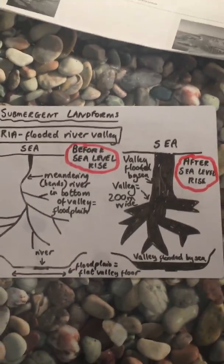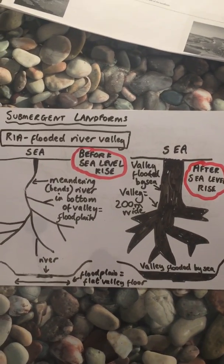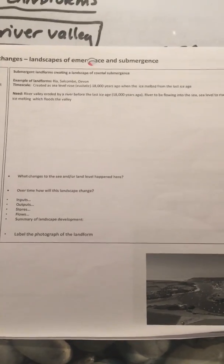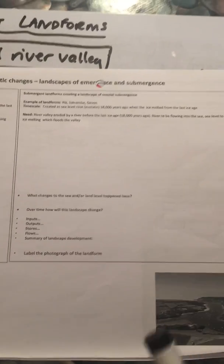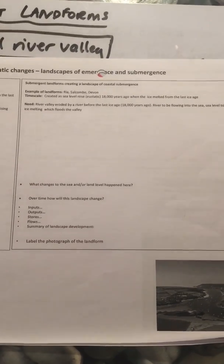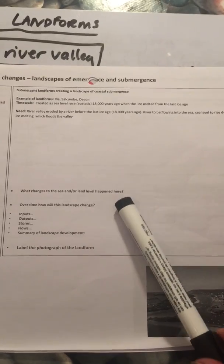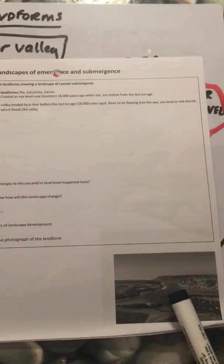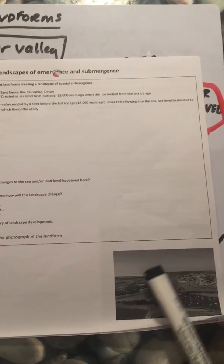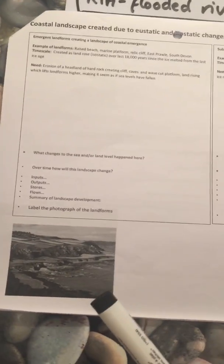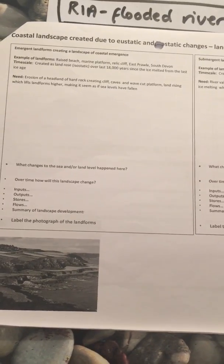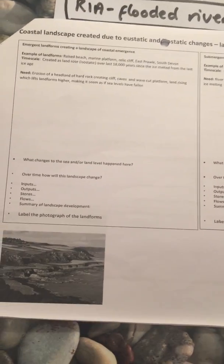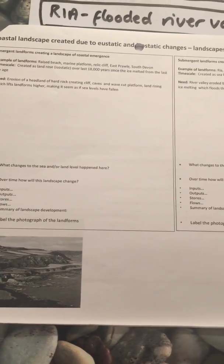That diagram there can go on your sheet, so let me just pull the sheet in front of me. Draw the diagram in this slot here, and like with all the other features we've been doing for landforms, just fill in all these bits here and label the photograph as well. Label the features on there — I'm hoping you did that with this one, with the raised platform and the relic cliff.